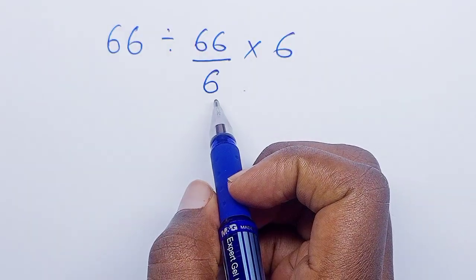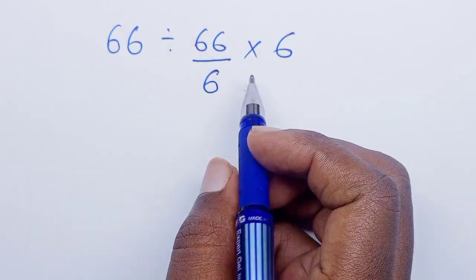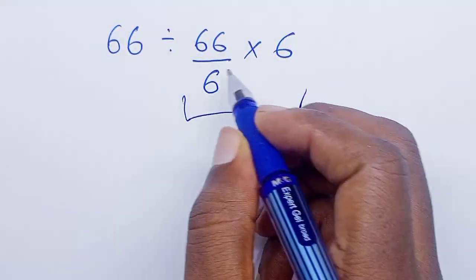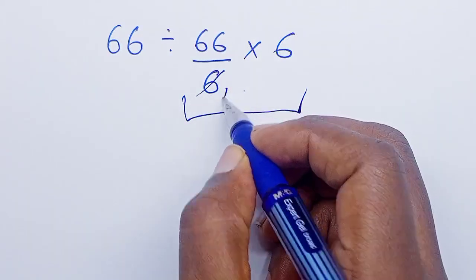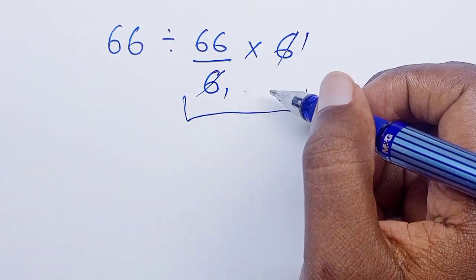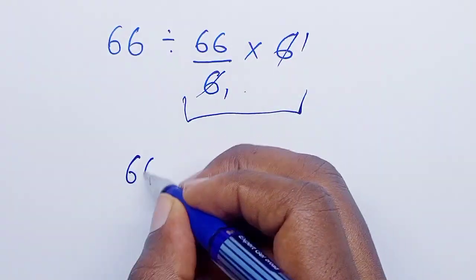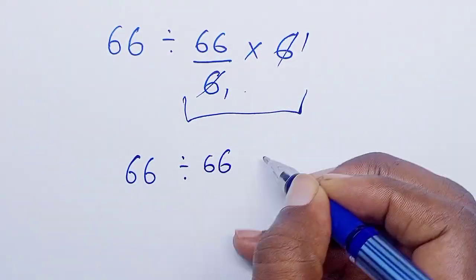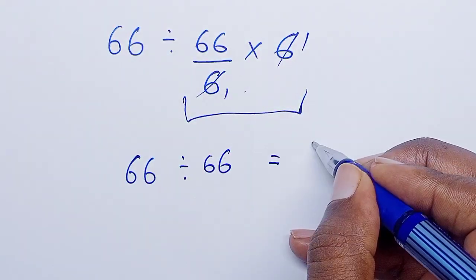Okay, so let's have we have 66 divided by 66 over 6 times 6. So when we consider this first, we shall have 6 multiplied by this. The 6 cancels and we are left with 66 divided by 66, which equals 1.